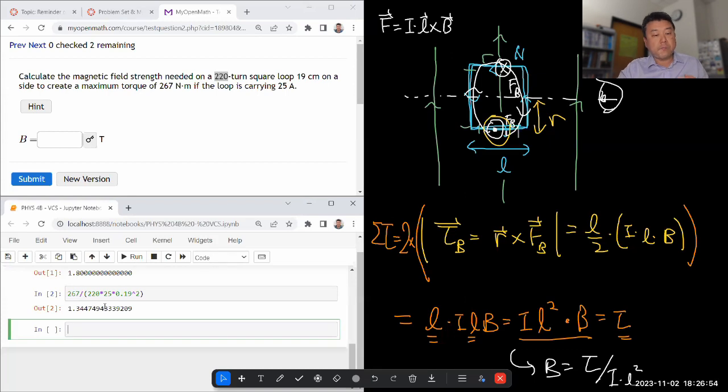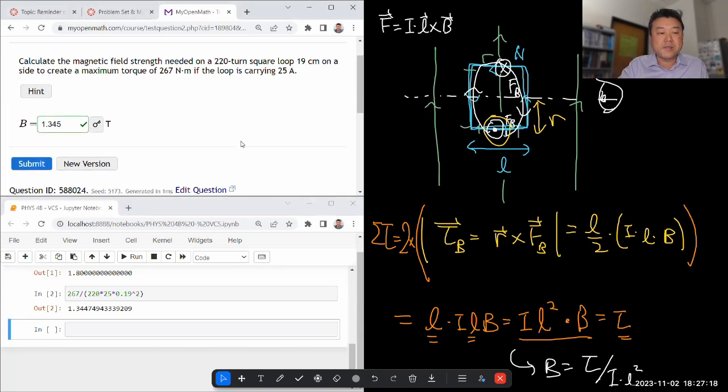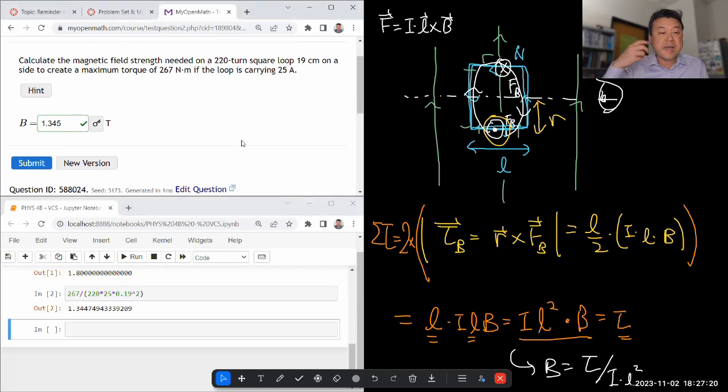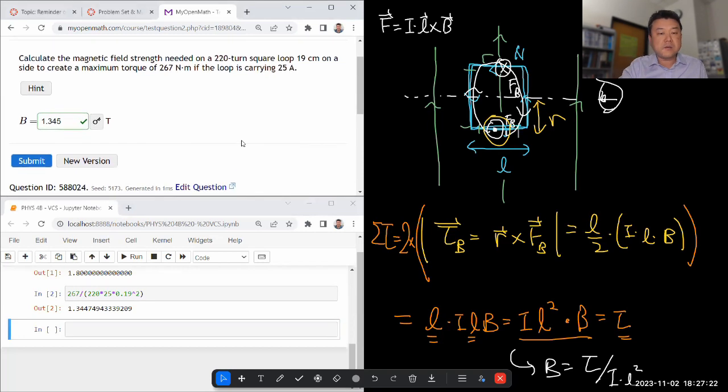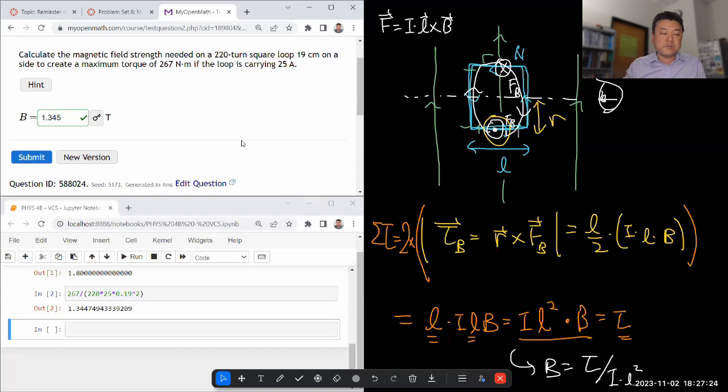So when I do that, I get an answer of 1.345. And since I plugged in all the numbers in basic SI units, the unit that I get should be basic SI unit, which is Tesla. At 1.345, it's a pretty large magnetic field. Tesla is a pretty large magnetic field. In fact, an ampere is pretty large current.